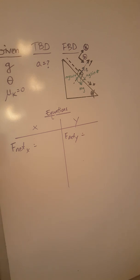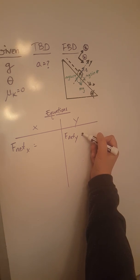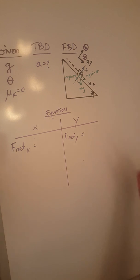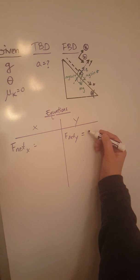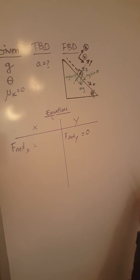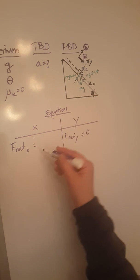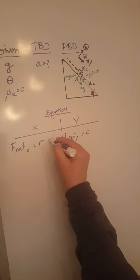Newton's second law of motion says that F net equals m times a. However, our object does not accelerate on the y, therefore F net y will be zero. It does accelerate on the x, so therefore F net x will be m times a.